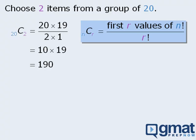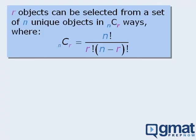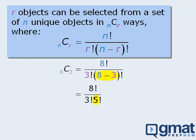Now that you know how the shortcut works, let's see why it works. To do this, let's call up our conventional formula for calculating combinations and use it to evaluate eight choose three. Here, n equals eight and r equals three. When we plug these values into the formula, our next step is to simplify eight minus three, which equals five.